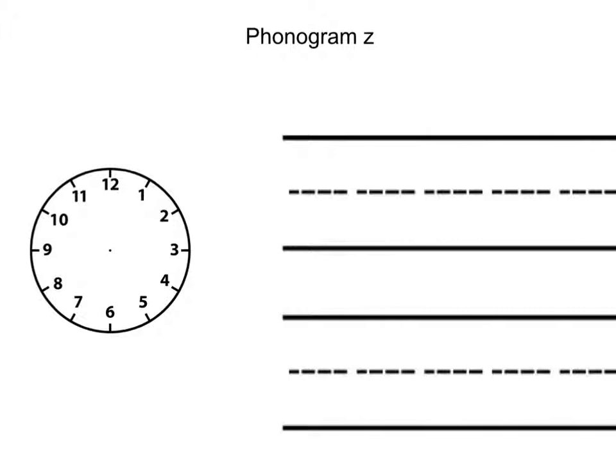To make the phonogram, we start above the 10 on the dotted midline, slide to the right in the direction we read and write, slant to the baseline through the 8, slide to the right on the baseline in the direction we read and write.